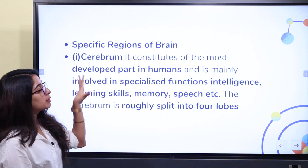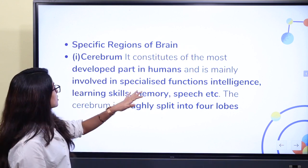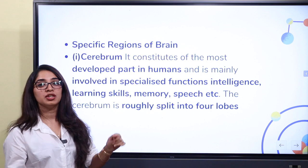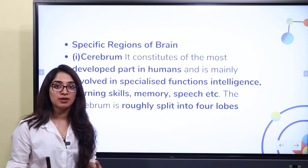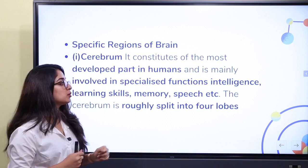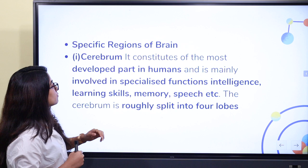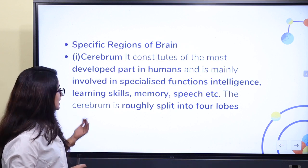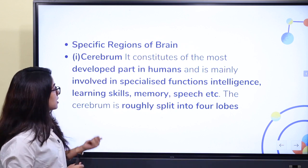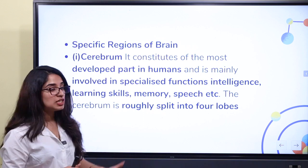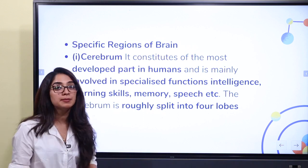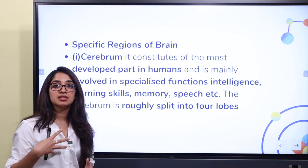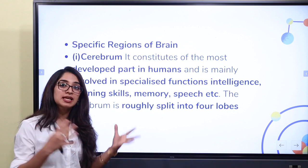The first region is the cerebrum, which consists of the most developed parts in humans. The cerebrum is mainly involved in specialized functions like intelligence, learning skills, memory, and speech.